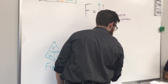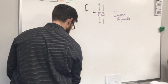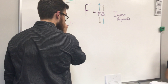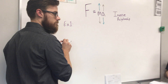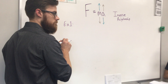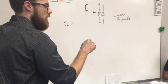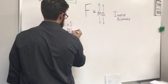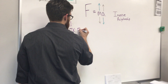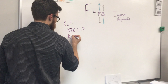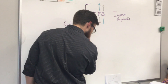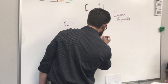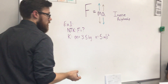Let's try an example. Calculate the force needed to accelerate an object with a mass of 3.5 kilograms at a rate of 5 meters per second squared. We start by identifying what we need to know — we're trying to find force. Then we write what we know: mass equals 3.5 kilograms, and acceleration equals 5 meters per second squared.